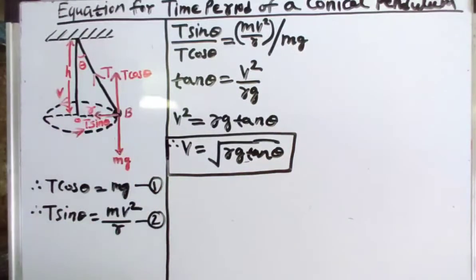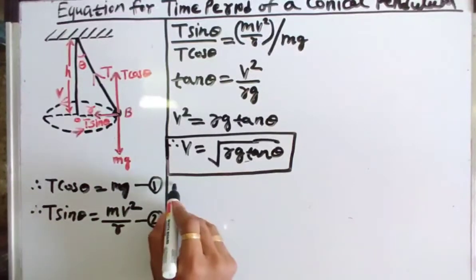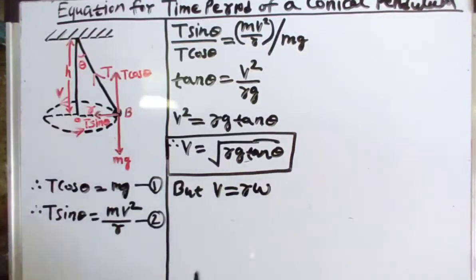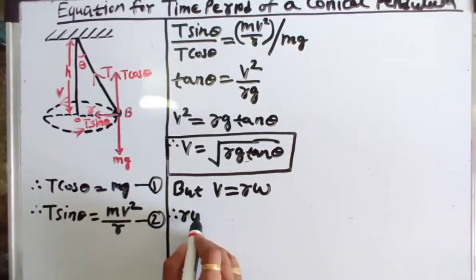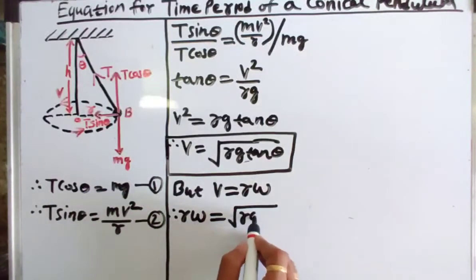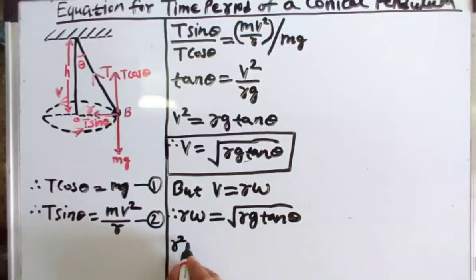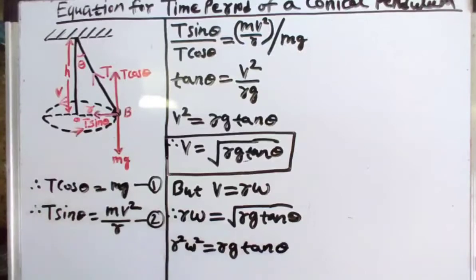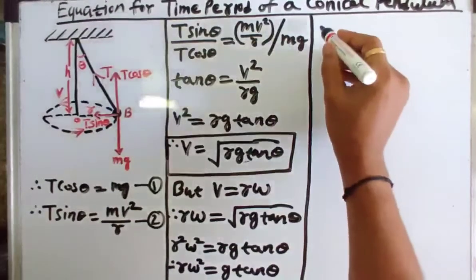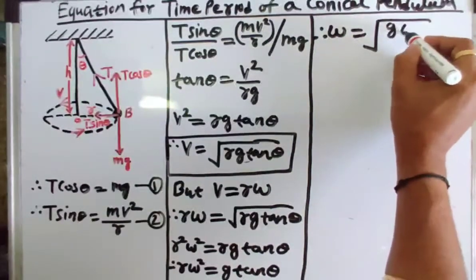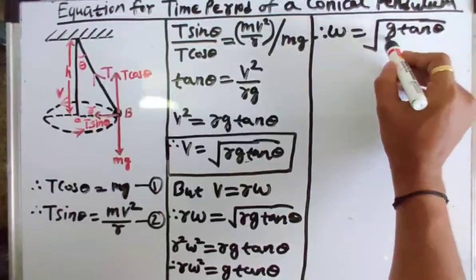We know the relation between linear speed and angular speed: v = rω. Substituting into the equation, rω = √(rg tanθ). Squaring both sides: r²ω² = rg tanθ. Therefore ω = √(g tanθ / r).